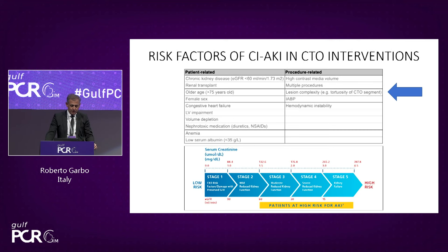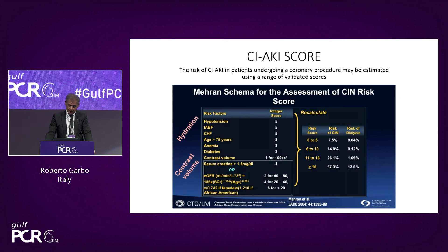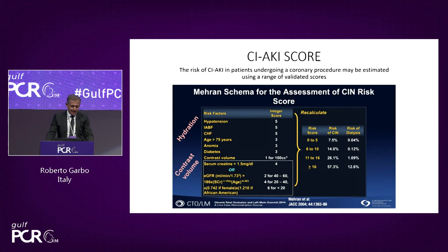There are many CIN risk scores. The most famous is the Mehran risk score, which takes into account patient-related risk factors including clinical situations, hypotension, and diabetes — all elements that increase the risk of contrast-induced nephropathy. Basal GFR is even more important in this assessment.